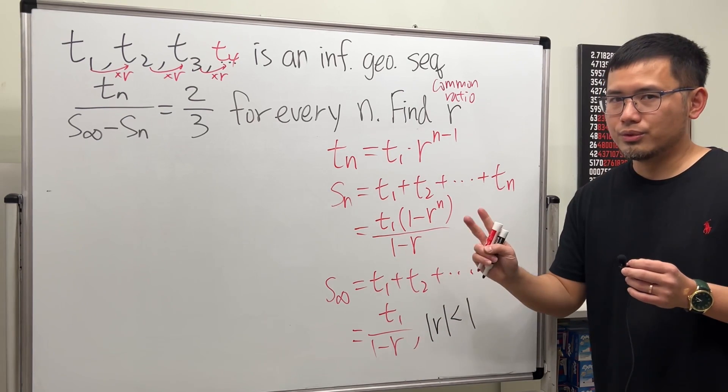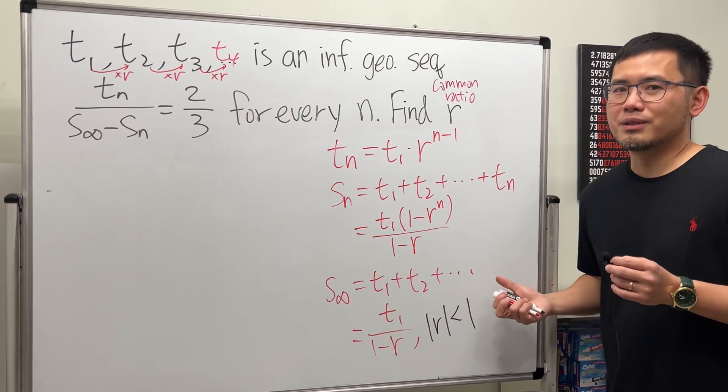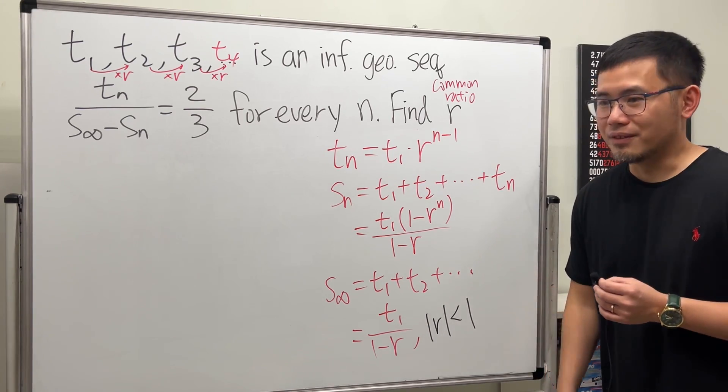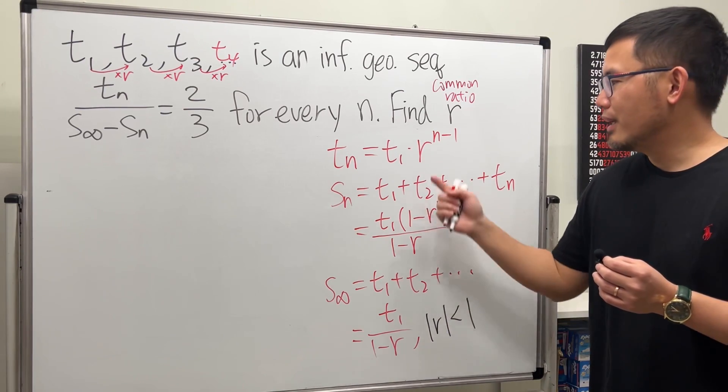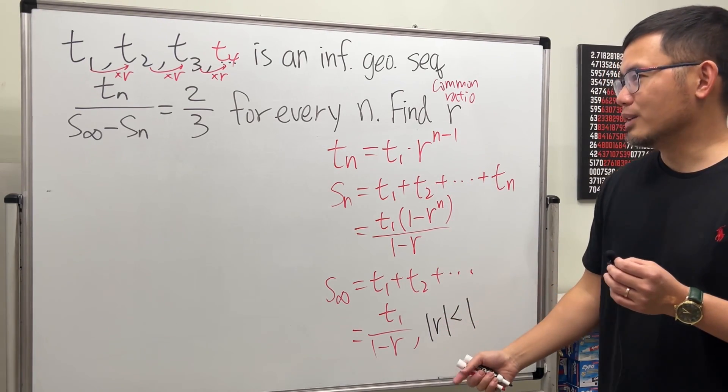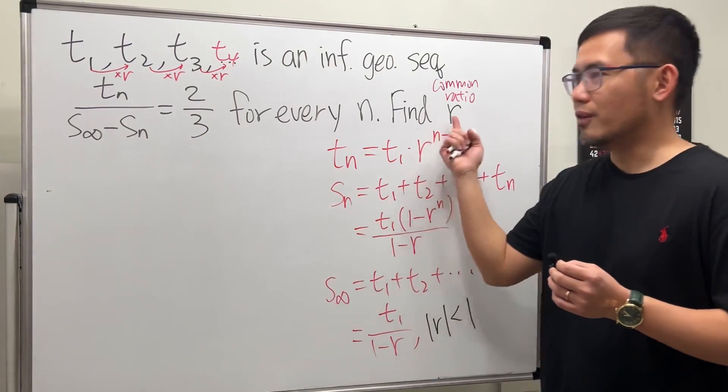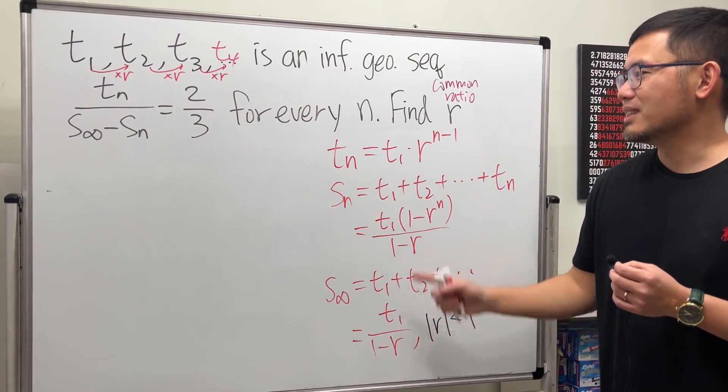Imagine if r is equal to 2. Then you get bigger, bigger, bigger terms, right? And you add up with infinity. So these are the formulas that we are going to use. Everything has the r. We can just throw that in here and then solve r. That's pretty much what the question is all about. So let's see.